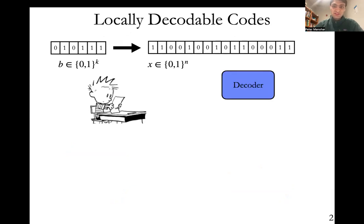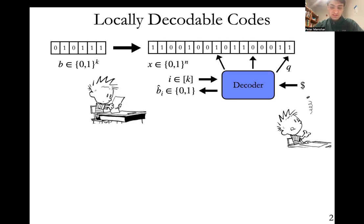What does this mean? It means that formally there is a decoder that takes as input index i in k, specifying which bit b_i we're going to attempt to decode from x. The decoder then gets to toss some coins, and based on the output of these coins, query the string x in some small number of spots. The decoder then reads the values of x on only these coordinates, and based on those values, outputs some estimate b-hat_i for b_i. And we would like the decoder to be recovering b_i.